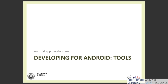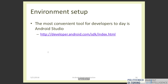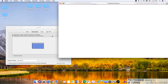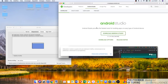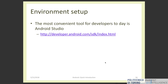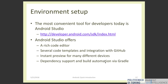Now let's say more about development tools. The most convenient way of developing Android applications is to use Android Studio, which is an integrated development environment (IDE) that you can download from a URL. You can also develop Android applications with Eclipse, but the most common way is Android Studio. In Android Studio you can find a rich code editor, a lot of code templates, and many tools for integrating your code with GitHub.